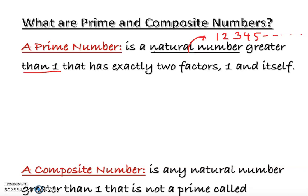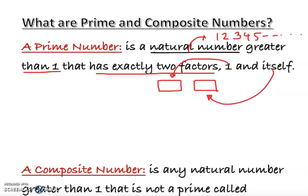They said greater than one, so any number must be bigger than one to be a prime number. For example, two dollars is greater than one dollar — yes. Is one dollar greater than one dollar? No. And it must have exactly two factors: one and itself, as in one times the number.